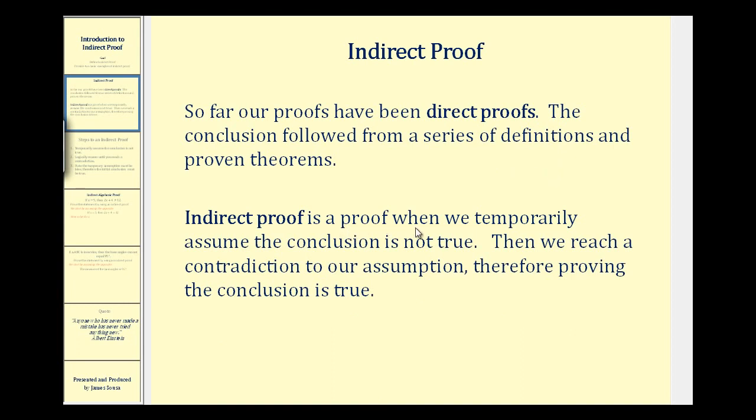Indirect proof is a proof when we temporarily assume the conclusion is not true and then we reach a contradiction to our assumption, therefore proving the conclusion is true.